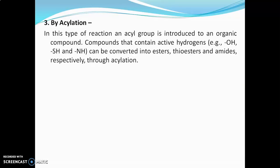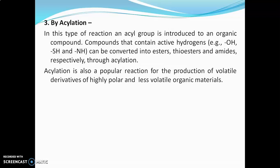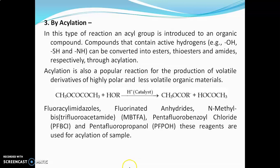The third type of derivatization reaction is acylation. In this type of reaction, an acyl group is introduced into the organic compound. Compounds that have active hydrogen such as hydroxyl hydrogen, sulfahydryl hydrogen, or amine can be converted into esters, thioesters, or amides respectively through acylation. Acylation is also a popular reaction for production of volatile derivatives of highly polar and less volatile organic materials. Reagents used include fluoroacyl imidazole, fluorinated anhydrides, N-methyl-bis-trifluoroacetamide, pentafluorobenzoyl fluoride, and pentafluoropropanol.